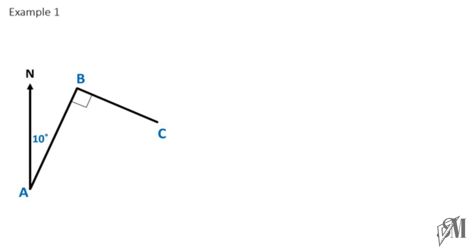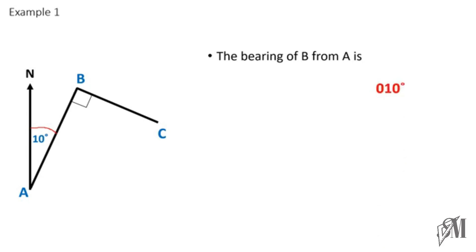In the next diagram, there are three locations: A, B, and C. The bearing of B from A is 10 degrees — the angle shown is 10°, so the bearing is written as 010 degrees.